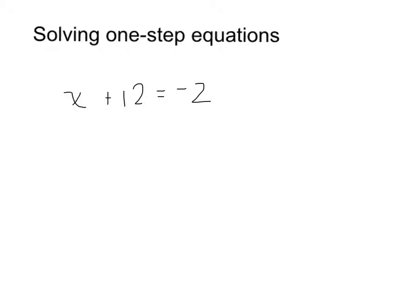In order to solve this, I always have to think, how do I get x? How do I get the variable by itself? Well, if I'm adding 12, to undo that, I'm going to subtract 12, taking away 12.